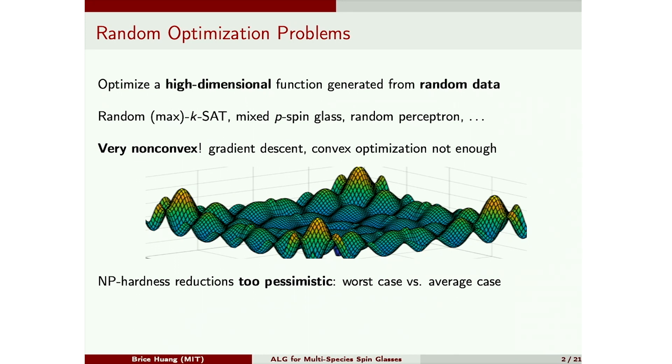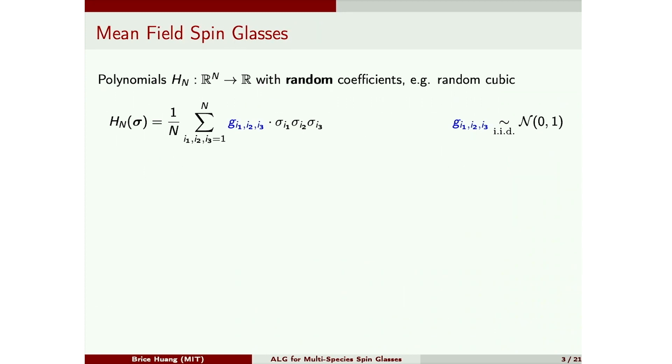So that leads us to our guiding question: what are the computational limits of random optimization problems? In this talk, we'll focus on one model, mean field spin glass.